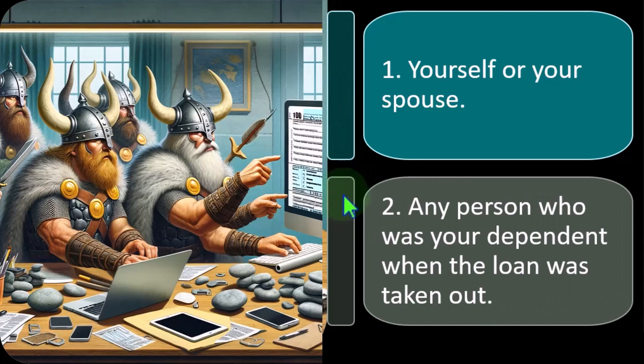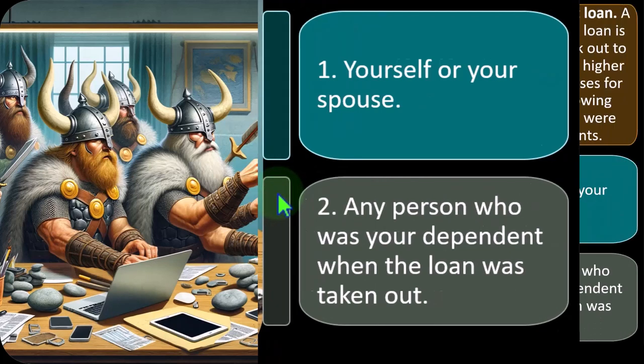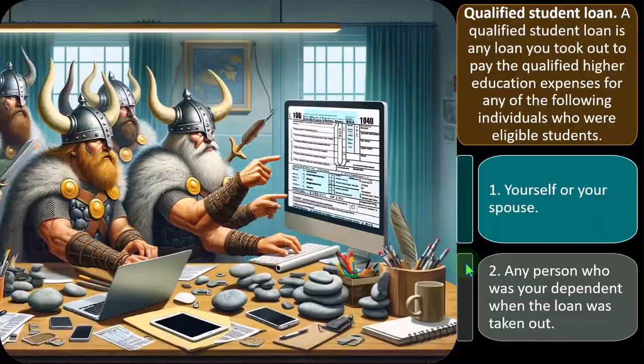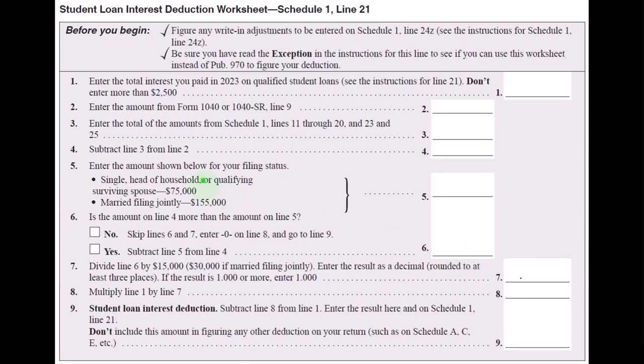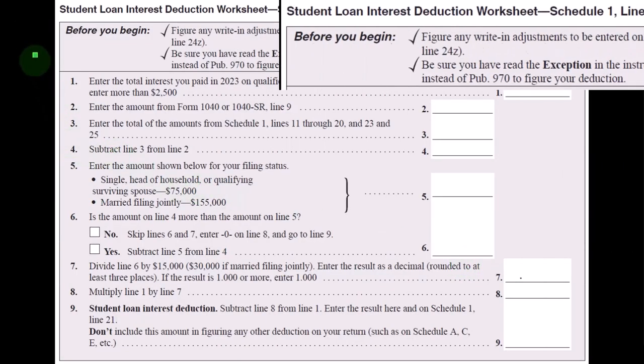Number two: any person who was your dependent when the loan was taken out — somebody essentially on your tax return. This is the student loan deduction worksheet.